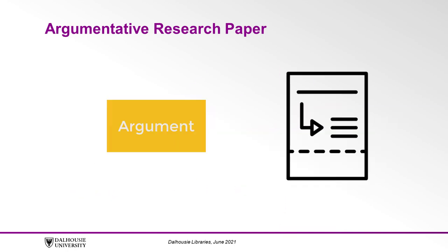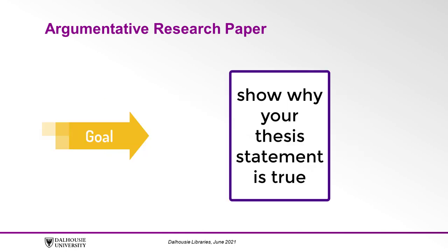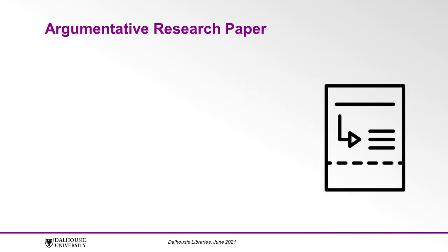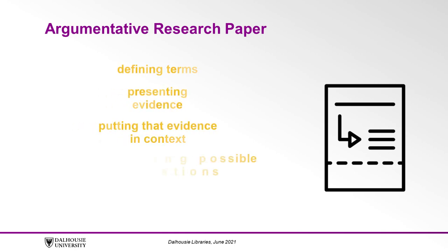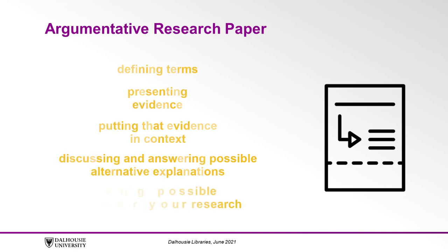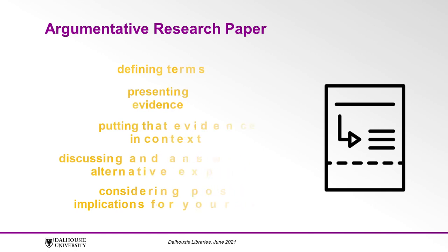The body of an argumentative research paper is where you actually make your argument. The goal is to use information gained from your research to show why your thesis statement is true. Each body paragraph should be dedicated to establishing a single aspect of the thesis by, for example, defining terms, presenting evidence, putting that evidence into context, discussing and answering possible alternative explanations, and considering possible implications for your research.